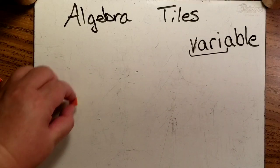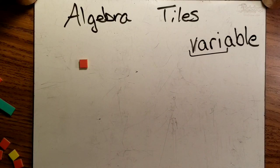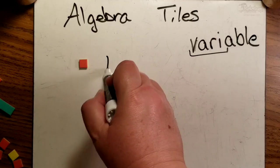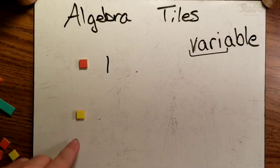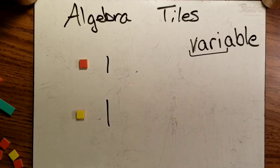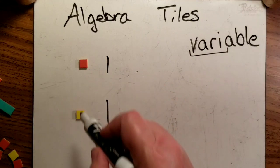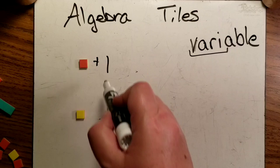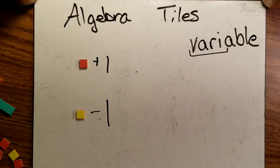These are how algebra tiles work. If you have one small square, that's going to be one. Here we have a yellow one, that's also one. But one of these is positive, one of these is negative, and you always have to check the key to make sure. This one's going to be positive one, this one's going to be negative one.